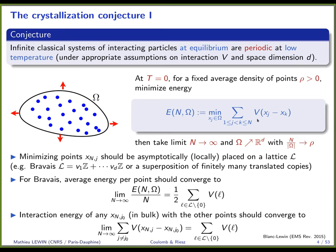Under appropriate assumptions on v and dimension d, the conjecture is that the points should asymptotically be placed on a lattice — i.e., become periodic. The lattice you see may depend on where you look, but fixing the origin and looking at finitely many points, they should converge to a lattice.